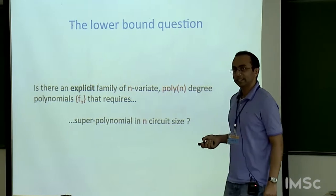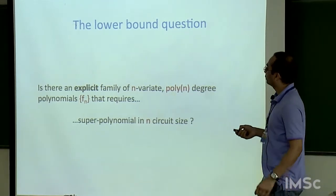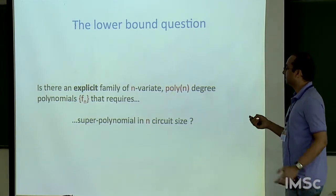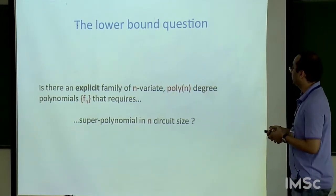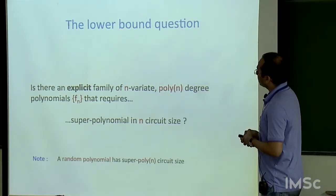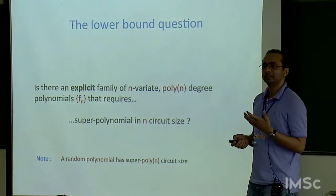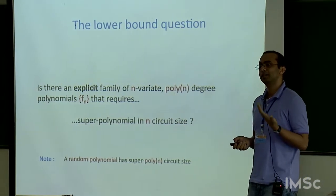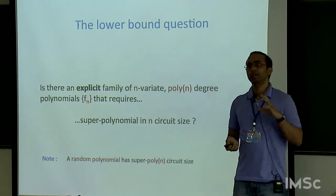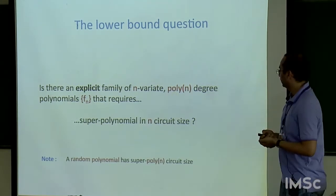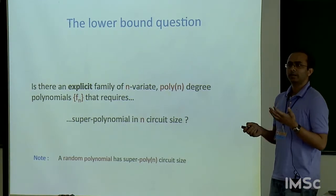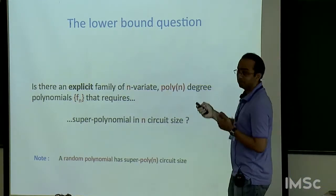The lower bound question is: is there an explicit family of n-variate polynomials of degree poly(n) such that F_n, the nth candidate in the family, requires super-polynomial circuit size? Using a probabilistic argument, it's fairly easy to show that a randomly chosen polynomial will have super-polynomial circuit size, so randomized constructions are easy. That's why we are after an explicit family.